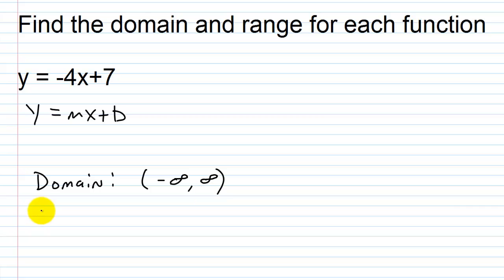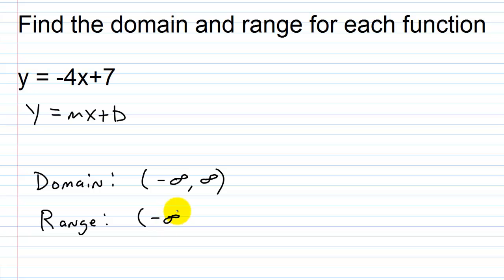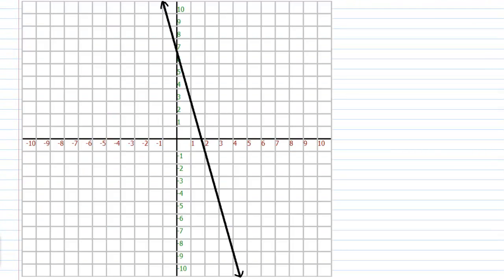Similarly for the range: I can plug anything in for X and my output Y can be anything as well, so the range is also the set of all real numbers. Looking at the graph for Y equals negative 4X plus 7, we can confirm the domain and range are both all real numbers, because this line extends indefinitely in both directions.